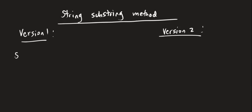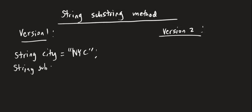Let's go over an example with version one. We have: string city equals 'nyc'. Then string subCity, which represents a portion of this string. We do city.substring() and inside the parentheses we have two arguments. In version one we have two arguments; in version two we have one argument — that's the key difference.